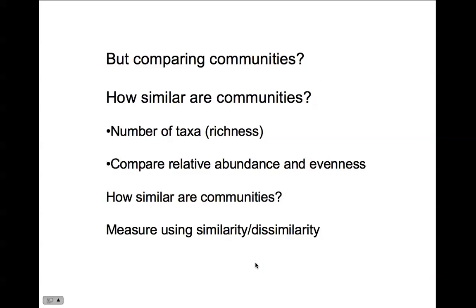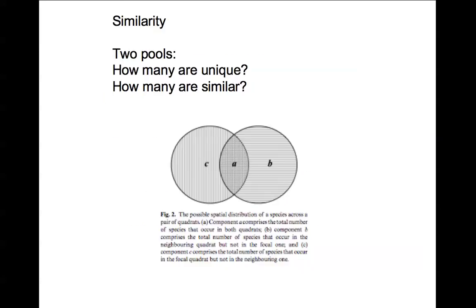That's the idea of evenness and diversity indices. Now, moving on to comparing composition and comparing diversity between sites — that's beta diversity. How similar are communities? These are called similarity and dissimilarity measures, and there are multiple ways to approach them with many different types of indices.